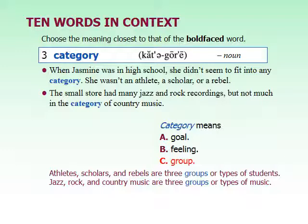In the first example, the categories are types of students: an athlete who does sports, a scholar who's really good at school, or a rebel who gets into trouble. In the second, the category is country music — a type of music. Another example: in class, there are different categories of students — those with really positive attitudes, those with really negative attitudes, and those with neutral attitudes.